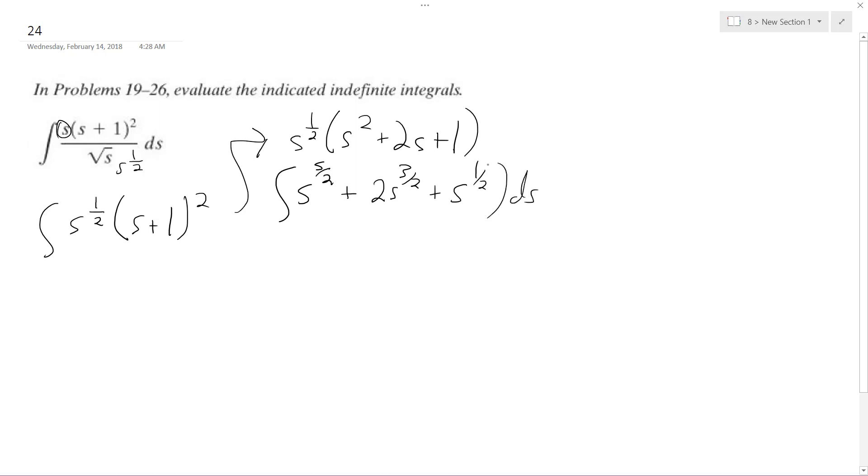Integrating all this, I get s raised to the five-halves plus one over five-halves plus one, plus 2s to the three-halves plus one over three-halves plus one.